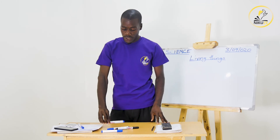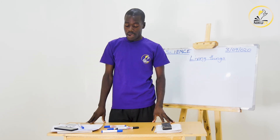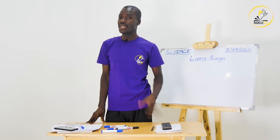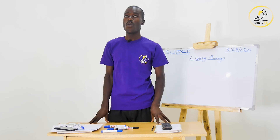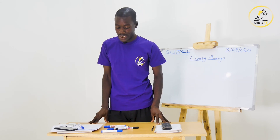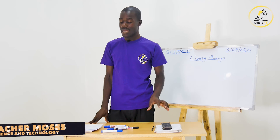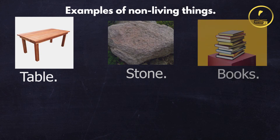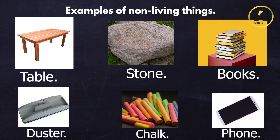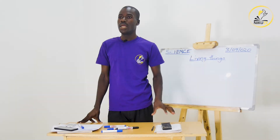If I leave it on the table and travel — let's say I travel to Mombasa — when I come back, I will still find it where I placed it, unless somebody moved it. Other examples include the table, stone, books, phone, duster, chalk, etc. Those are examples of non-living things.